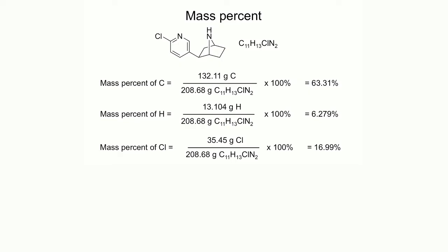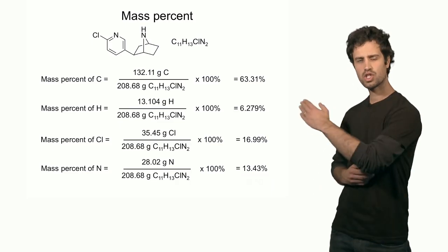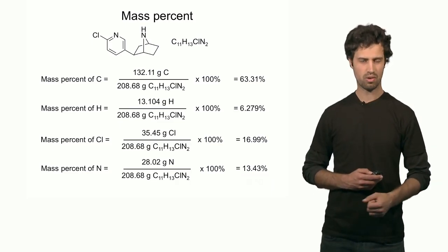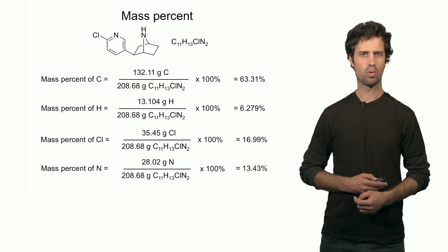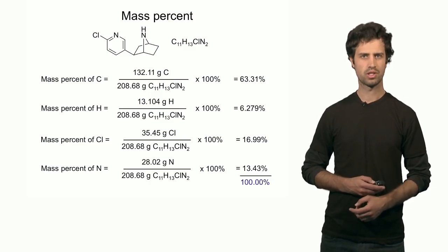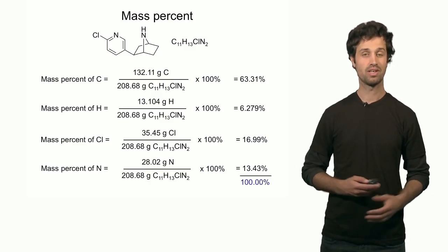For chlorine, the contribution was 35.45 grams. Dividing by the molar mass times 100 gives approximately 17%. For nitrogen, the contribution was approximately 28 grams; divided by the molar mass times 100% gives 13.4%. As a quick check, adding all percentages — 63%, 6.3%, 17%, and 13.4% — gives 100%, confirming the calculation is correct.